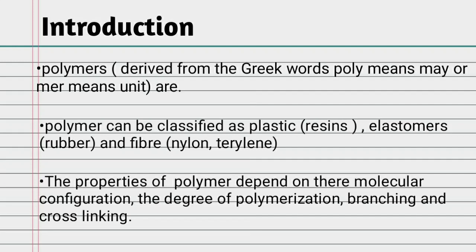Polymer can be classified as plastic, resin, elastomer, rubber, and fiber such as nylon. The properties of polymer depend on their molecular configuration, the degree of polymerization, branching, and cross-linking. Polymer classification includes plastic, elastomer, and fiber as types of material.